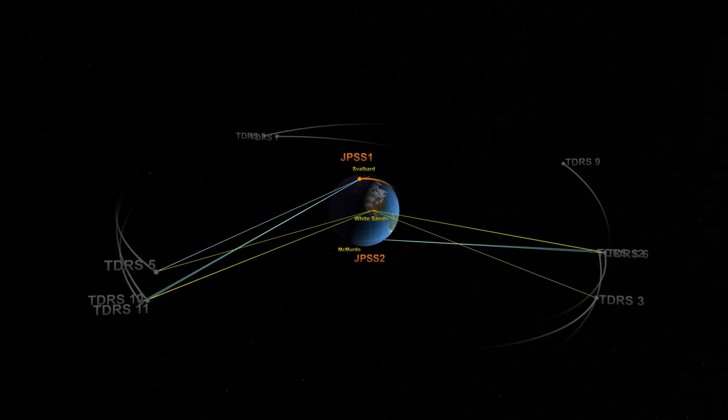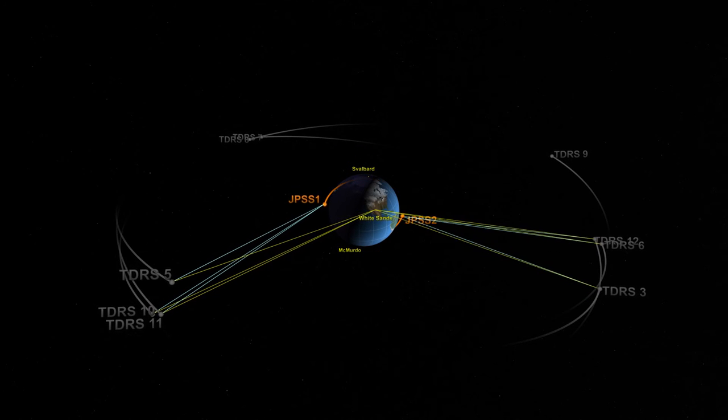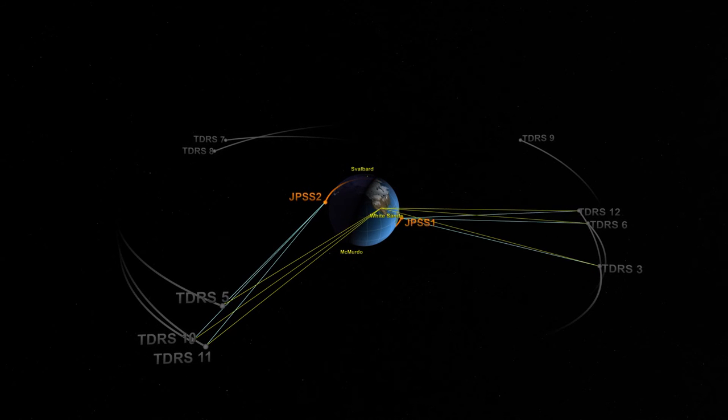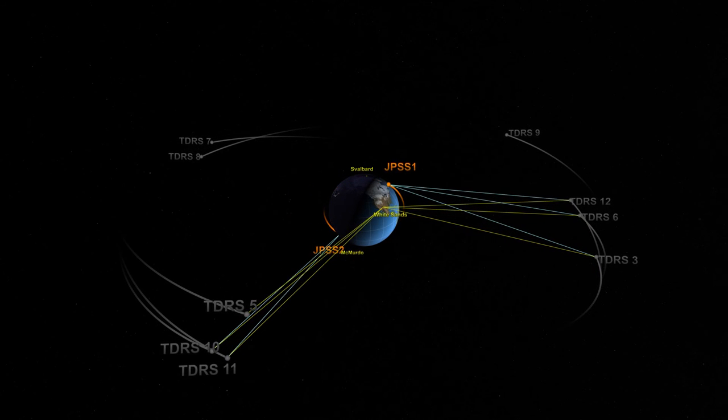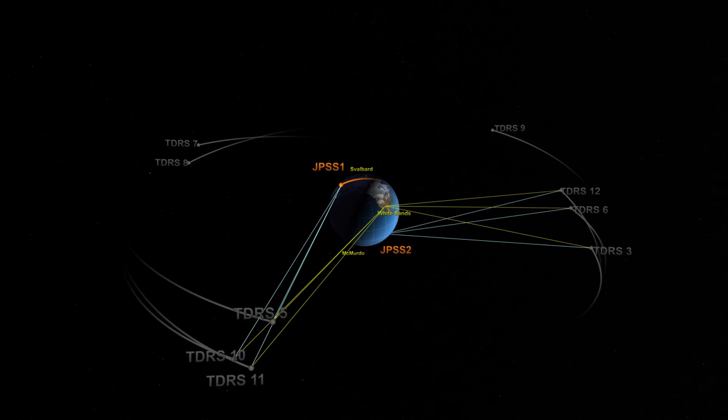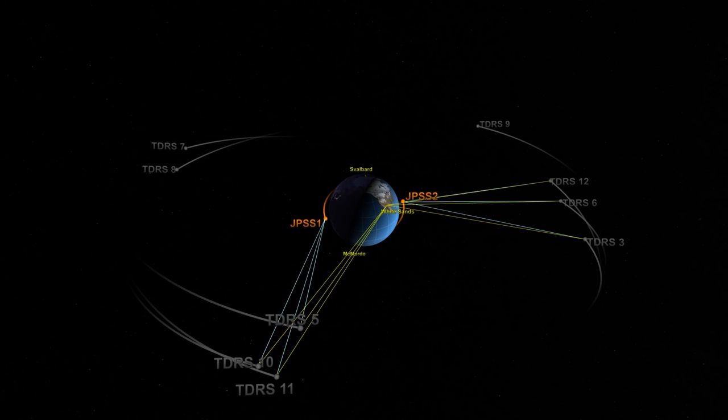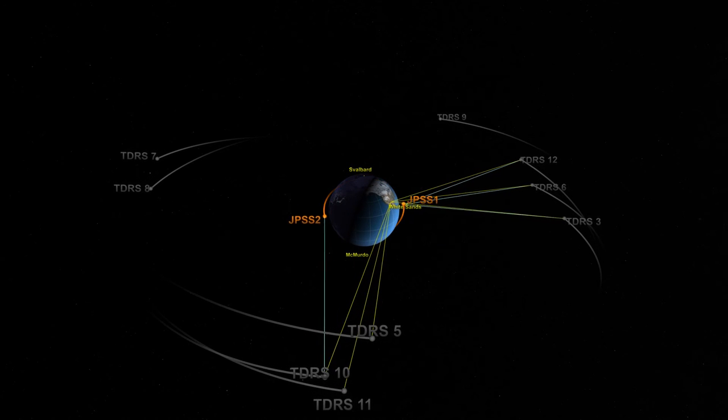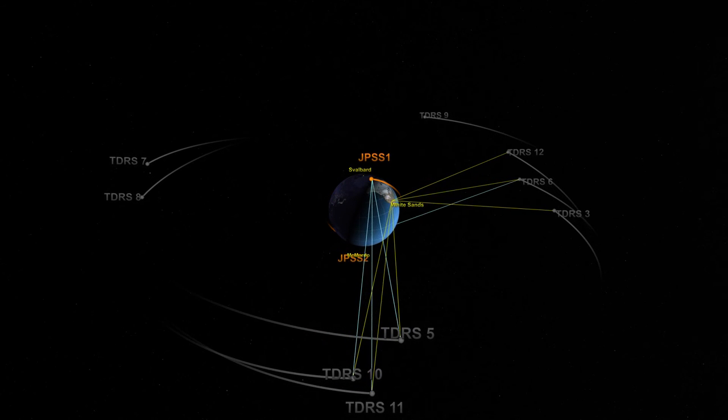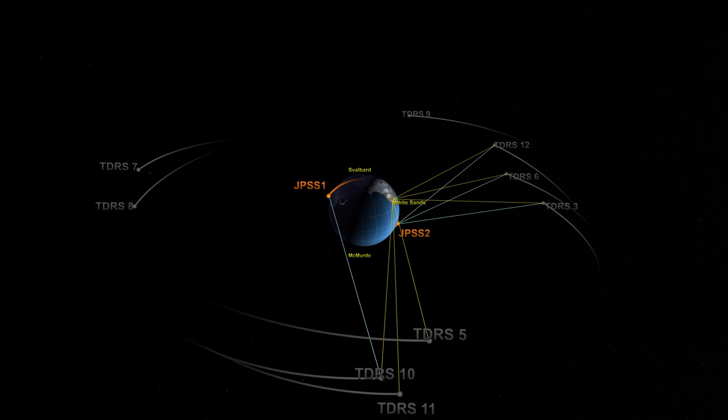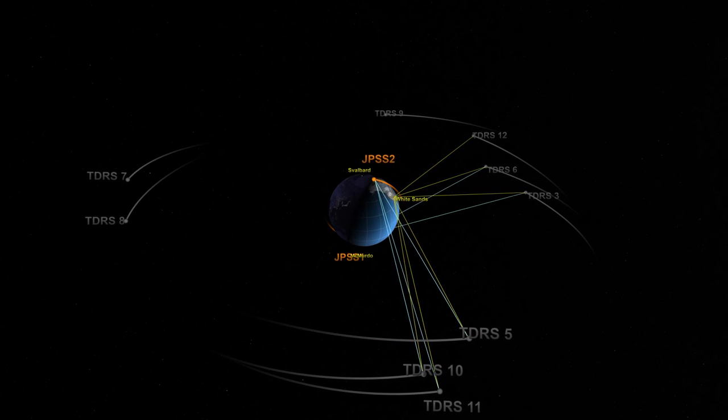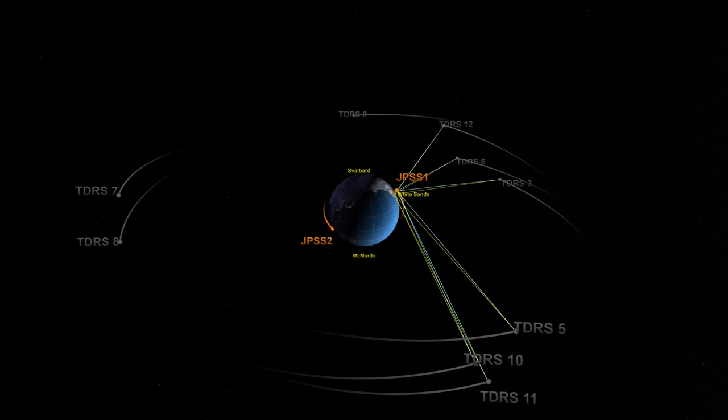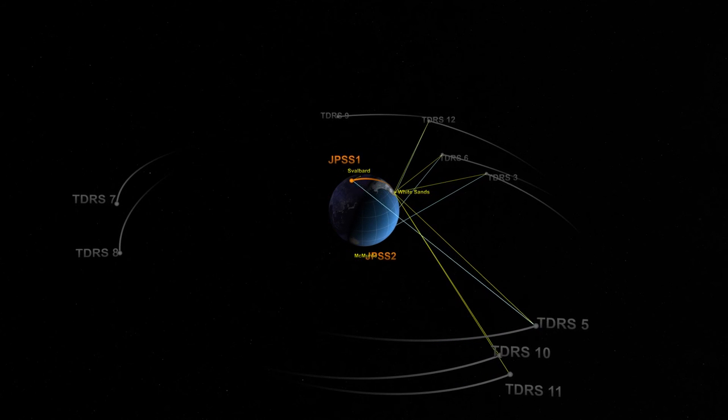As a result, these satellites remain above the same location on the Earth at all times. The JPSS satellites can use these as a relay to send data down to the TDRS ground station at White Sands, New Mexico. In this view, blue lines depict when a TDRS satellite is in view of a JPSS satellite, and yellow lines indicate data downlinks to the TDRS ground station. While this visualization depicts all possible times data can be communicated to TDRS, operationally, only six-minute contacts will be scheduled to downlink and relay data.